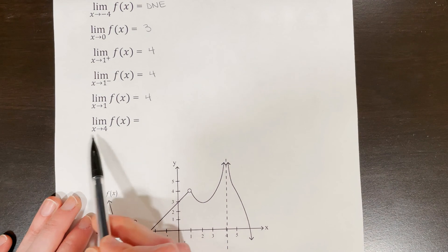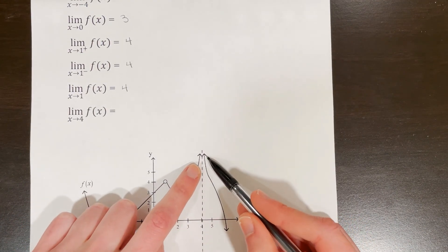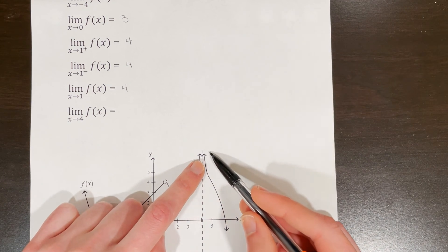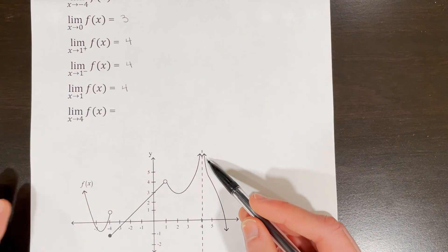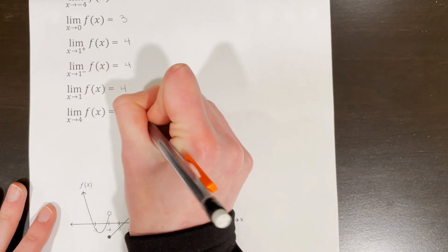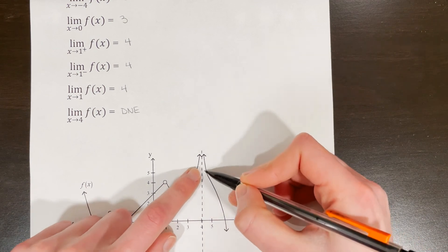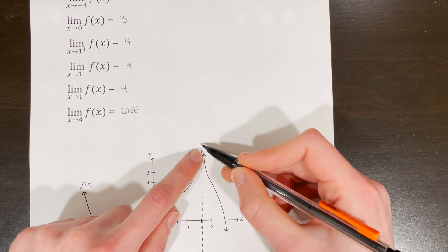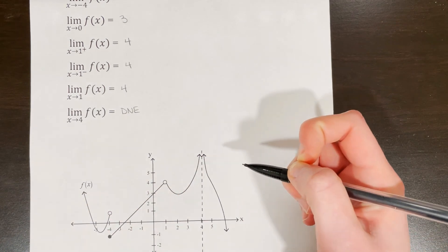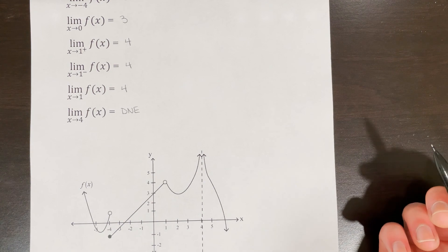For the limit of f of x as x approaches 4, both sides are going up to infinity. Since infinity is not a definable number, the limit does not exist. Even though the left-side and right-side limits are both approaching infinity, this falls under the case where a function is unbounded — approaching positive or negative infinity — so the limit does not exist.